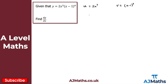I also need to find u prime and v prime by differentiating u and v with respect to x. So u prime — differentiating 2x cubed — gives 6x squared. For v prime, (x minus 1) to the power of 4, this is a simple application of the chain rule, giving 4(x minus 1) to the power of 3.